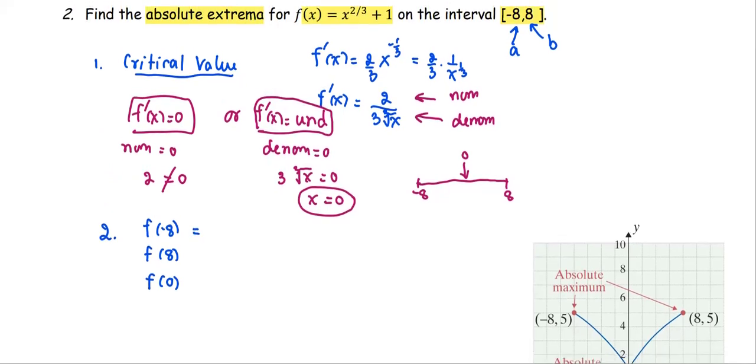So at negative eight, the value is (-8)^(2/3) + 1. That will give us (-2)^2, which is four, four plus one is five.